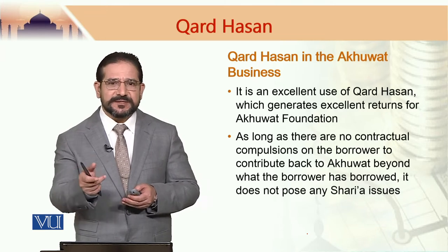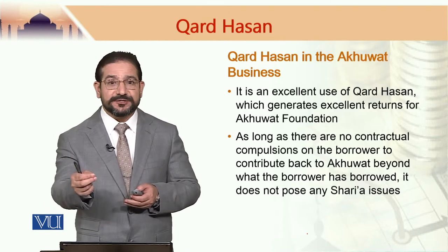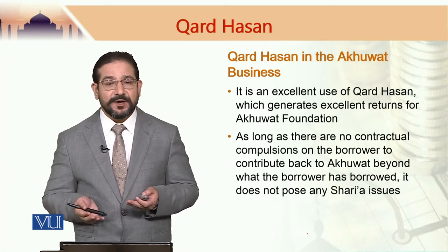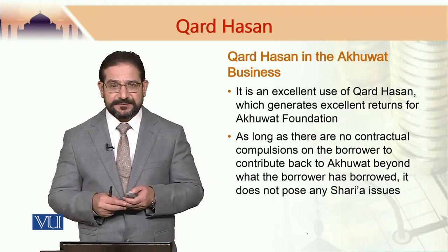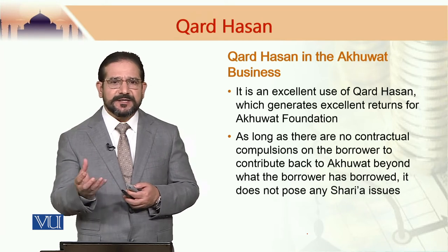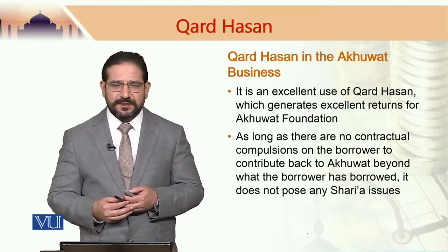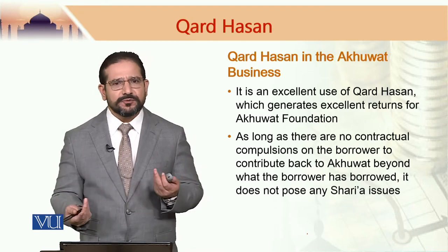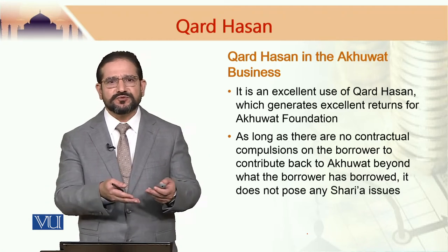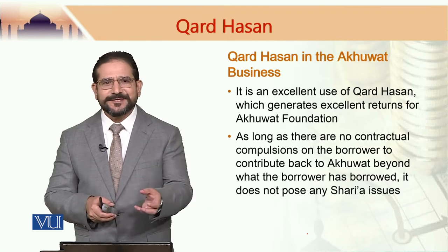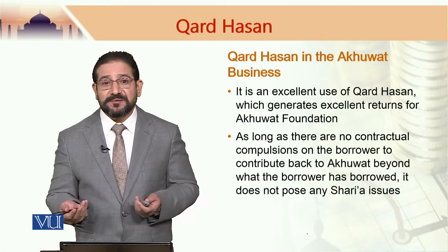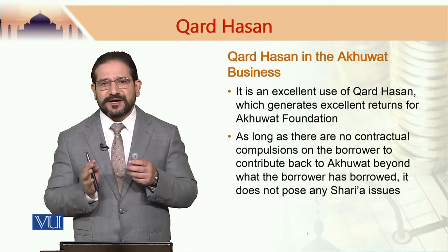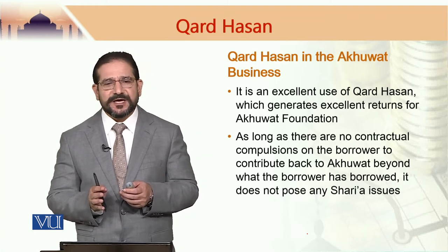Akhwad gives a borrower a loan of 50,000 rupees, and says that you simply return the 50,000 rupees back to us — this is a basic characteristic of Qardh Hassan. Now, if a borrower sets up a stall or a cart, Akhwad tells them to place a charity box on their stall. Akhwad encourages the borrower, if they are able, to put some money in it on a daily basis — if not, that is okay as well. And they can encourage their customers to do the same. Even without encouragement, once customers see this charity box, some of them would put their change or small notes in it.